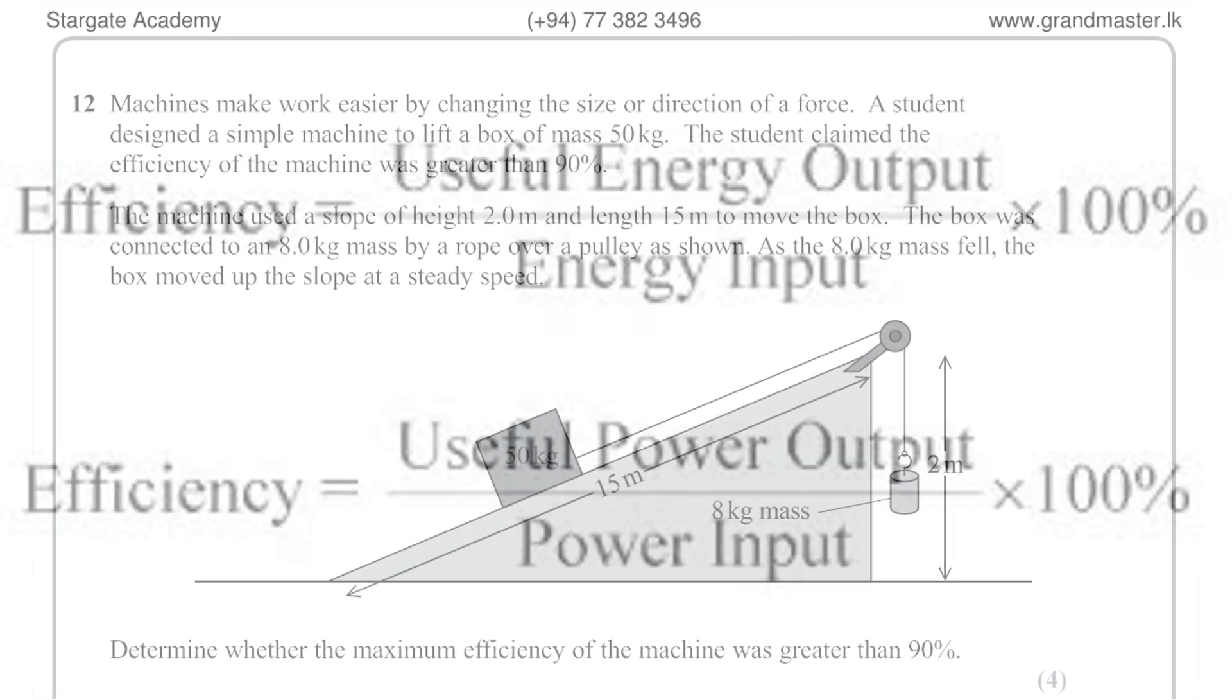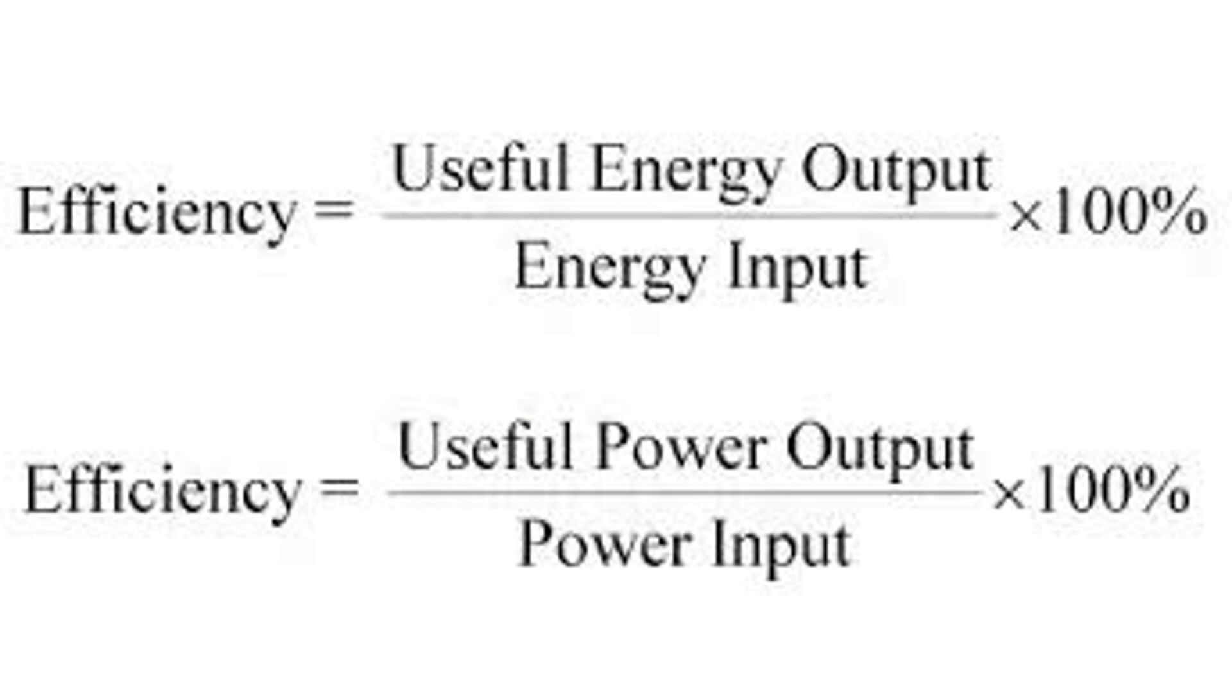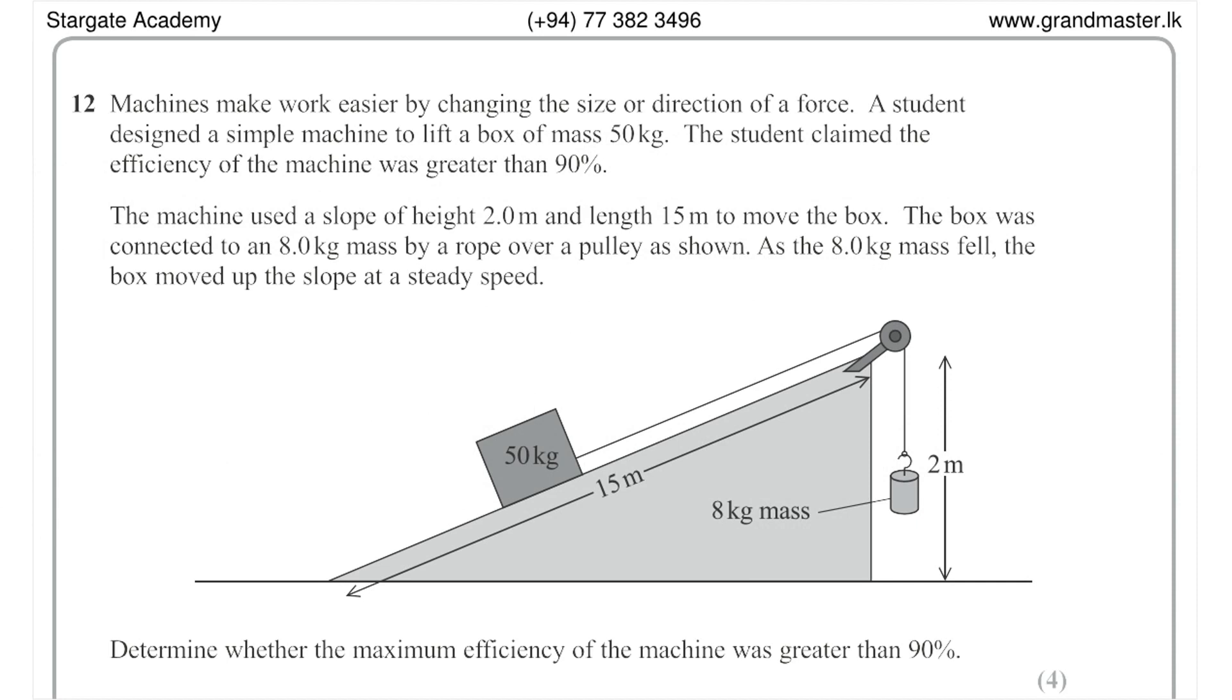Efficiency of a machine or process is given by the following relationship: Efficiency equals useful energy output over total energy input times 100%, or efficiency equals useful power output over total power input times 100%. In this machine,